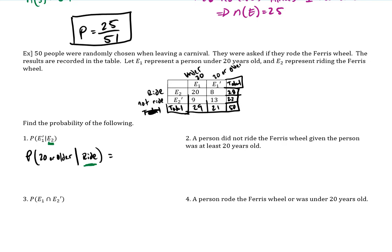I'm going to mark this table multiple times in this problem, so I'll erase in between. So we will use 'ride' — that's that 28 right there — as the denominator for this problem. And then in that 28, I'm looking at the 20 or older. The not E1 would be 8. So it's 8 out of 28. Then you can simplify: each is divisible by 4, so it would be 2 over 7.